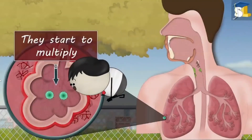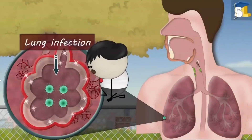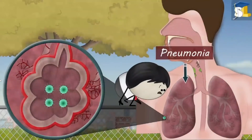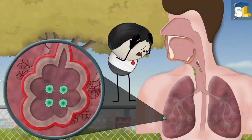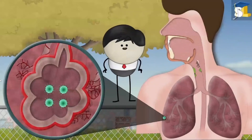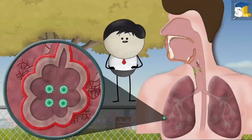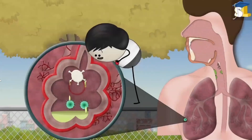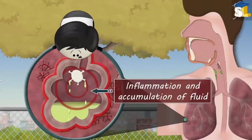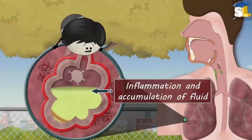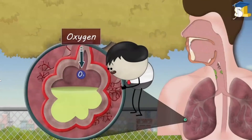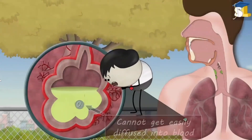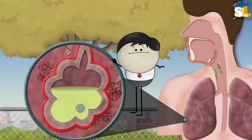There, they start to multiply, causing lung infection — that is pneumonia. To protect ourselves, the immune cells start attacking the microorganisms, causing inflammation and accumulation of fluid in the alveoli. As a result, the inhaled oxygen cannot get easily diffused into blood, thus causing difficulty in breathing.